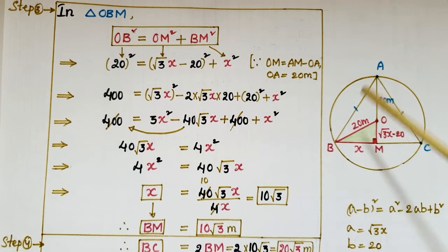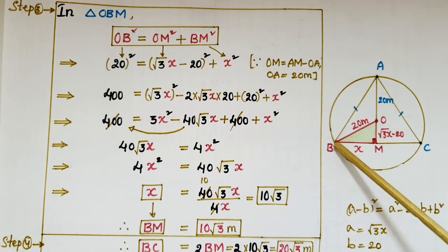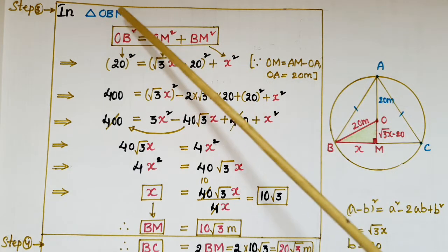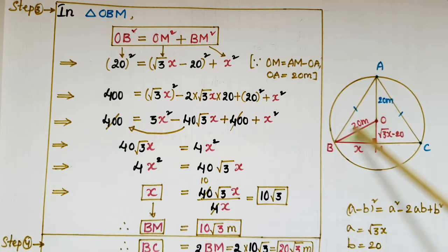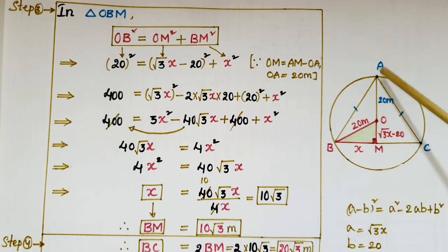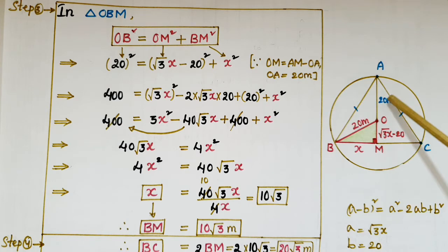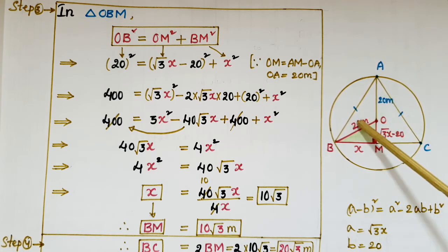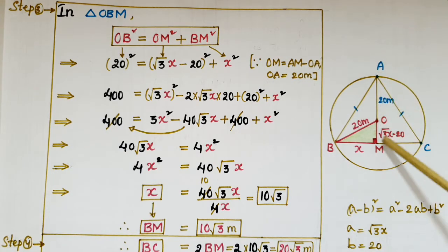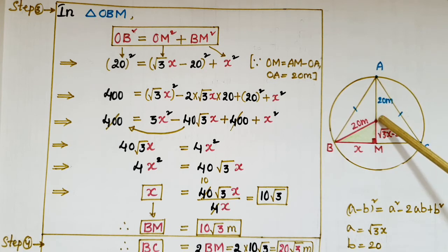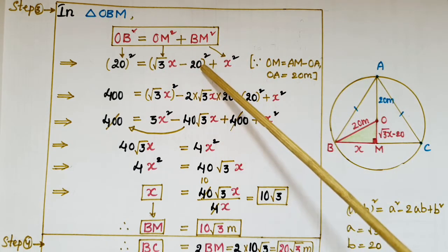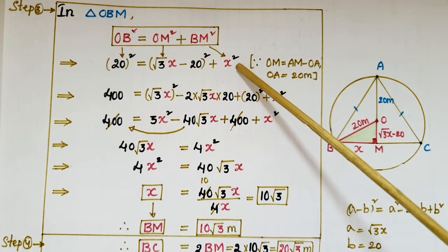Now we need to calculate the BM value to find the string length BC. Join O and B — you can see a right-angle triangle OBM. In triangle OBM, by Pythagoras theorem: OB² = OM² + BM². Here OB is the radius of the circle. Both OB and OA are radii, given as 20 meters. So OB = 20. Also, OM = AM − OA = √3x − 20.